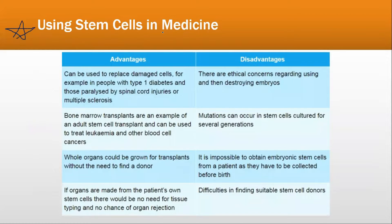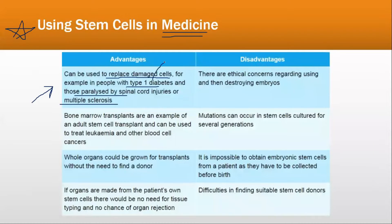Using stem cells in medicine — one advantage is that they can be used to replace damaged cells. For example, if your muscles are damaged, stem cells would convert themselves into muscle cells. This is especially useful in people with type 1 diabetes and those paralyzed by spinal cord injuries or multiple skin loss cells.